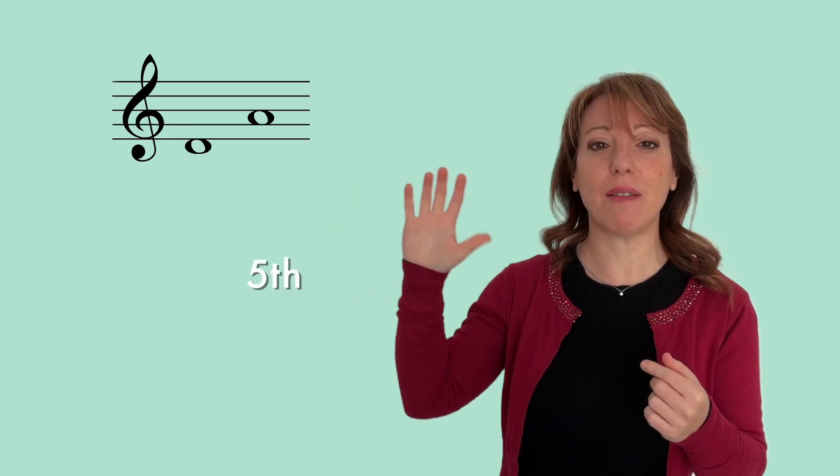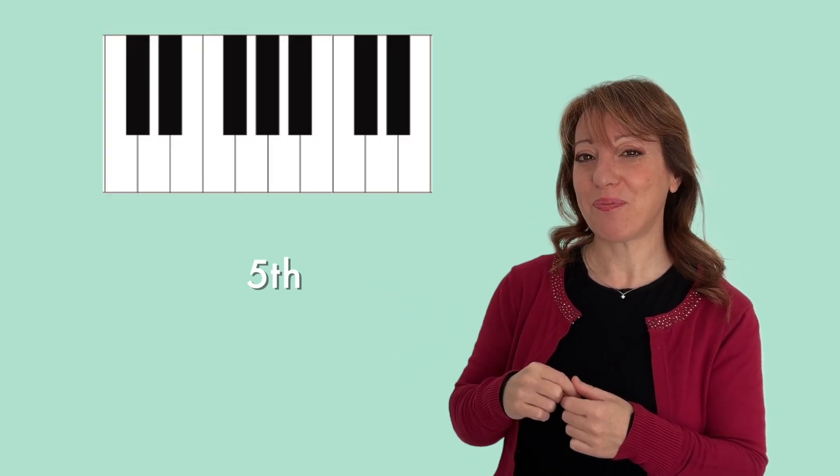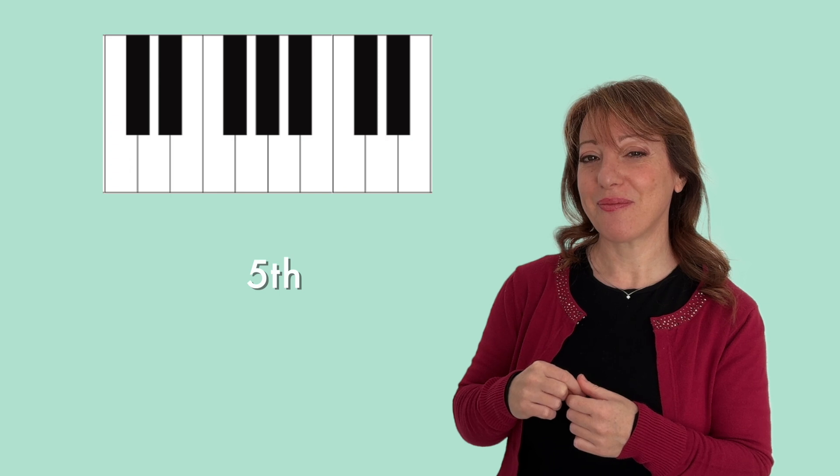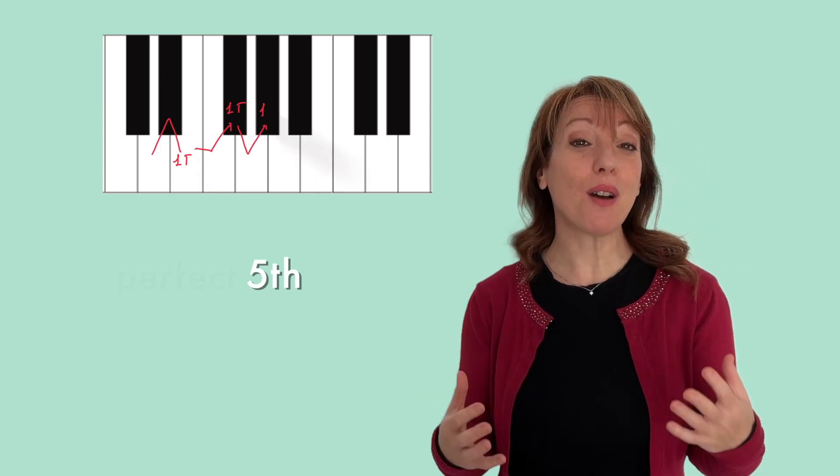Let's go on to another interval, a perfect interval. For example, D-A. It's an interval of fifth. So what do we do now? We counted the steps and there are five. So this is a fifth. Now, what type of fifth? Perfect or augmented or diminished? We need to count the number of tones and semitones. And if we count them, pause the video and count them. If you counted three and a half, you were right. So this is a perfect interval.